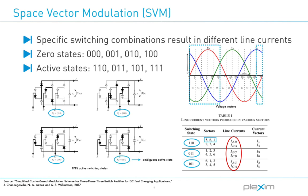Here, I am highlighting the sectors 5, 6, and 1, where VA is always greater than VB, thus corresponding in the line current IAB. In the sectors 2, 3, and 4 here, it is the reverse scenario.